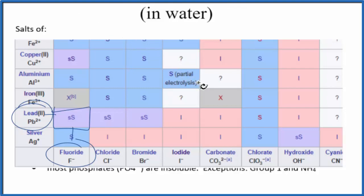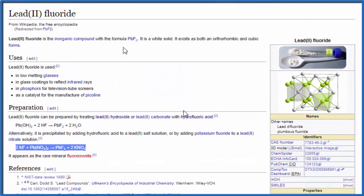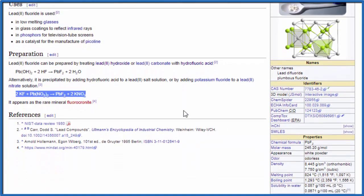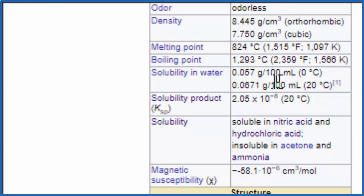Let's take a look real quick at some experimental data to see what that says. Here's our lead two fluoride. This is what it looks like. As we go down, we're looking for solubility. Here's solubility. This is solubility in water: 0.057 grams per hundred milliliters at 0 degrees Celsius. That's not very much dissolving.